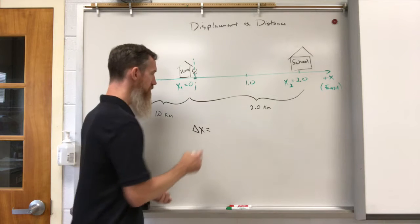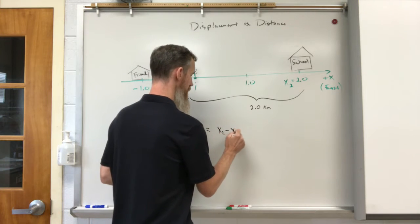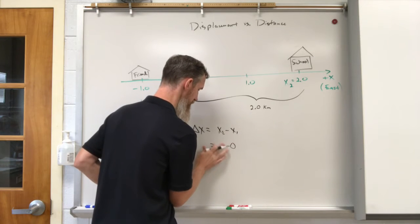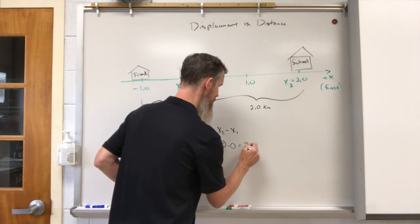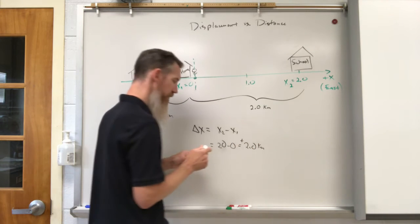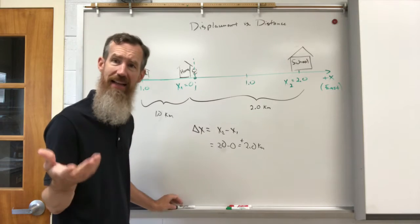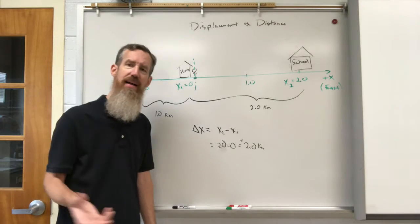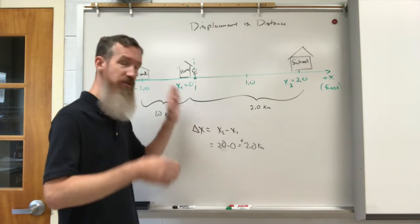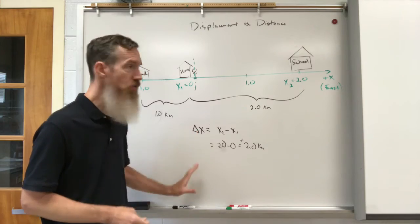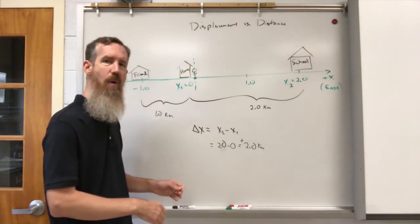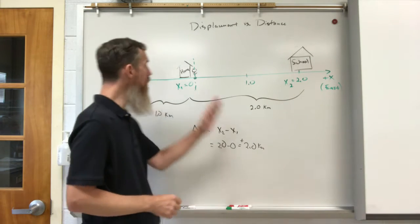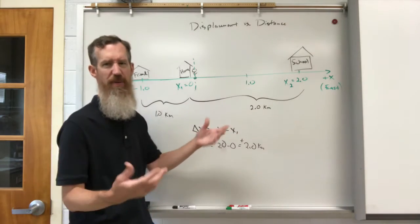So according to displacement, your displacement would be x2 minus x1, 2 minus 0, 2.0 minus 0, positive 2.0 kilometers, which was exactly like before when we just went from home straight to school. Because when we define displacement in physics, it's from the starting point to the ending point, no matter how you get there. You can go direct or you can take another route.